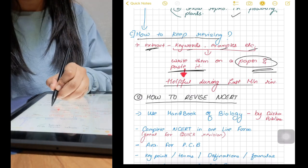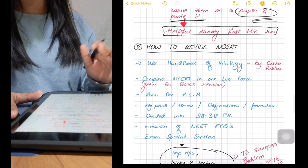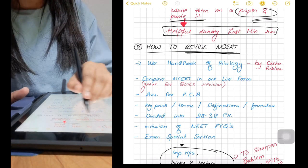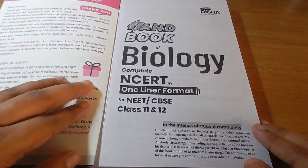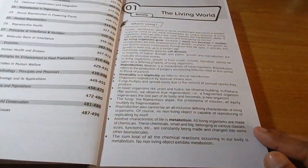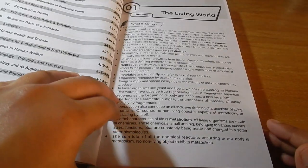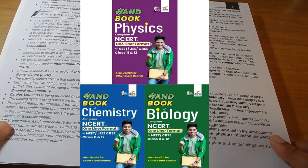Once you're done with reading NCRT, it is very important to keep revising NCRT. I will share the steps to revise NCRT but before that, you can also use this book from Disha publication. This is Handbook of Biology. In this book, you'll get complete NCRT in one-liner format and this book is amazing for quick revision. This comes in set of three books, physics, chemistry and bio.